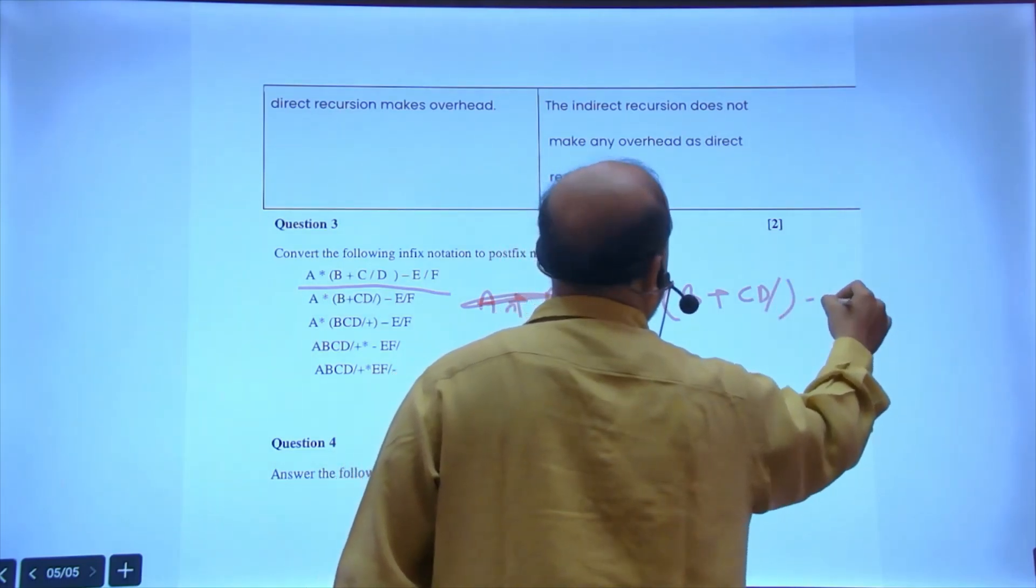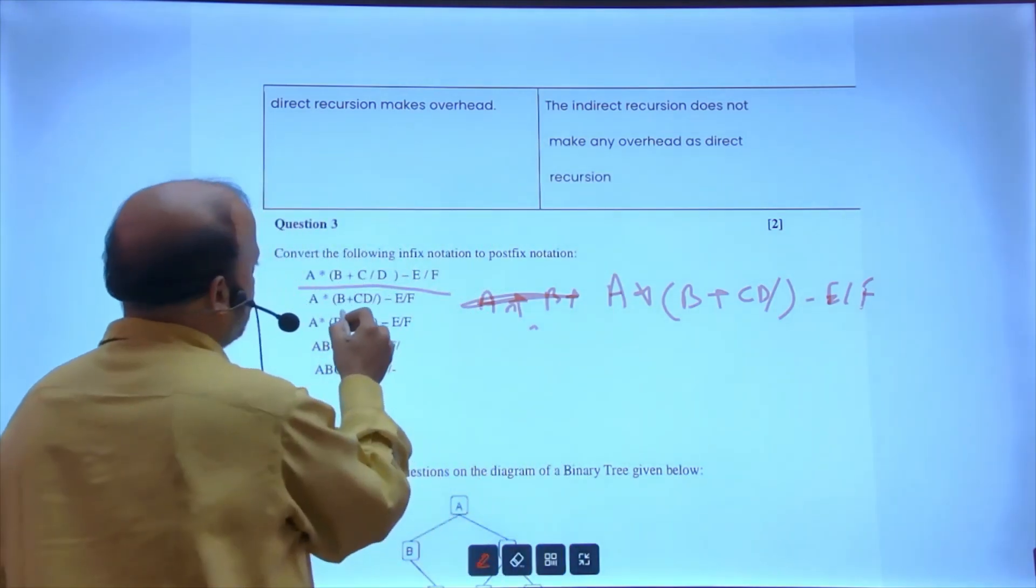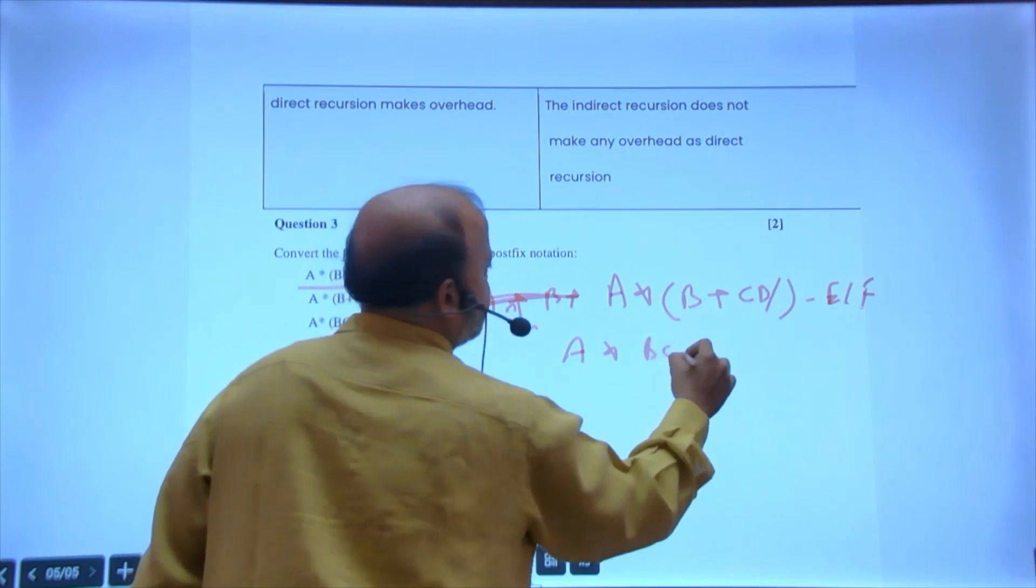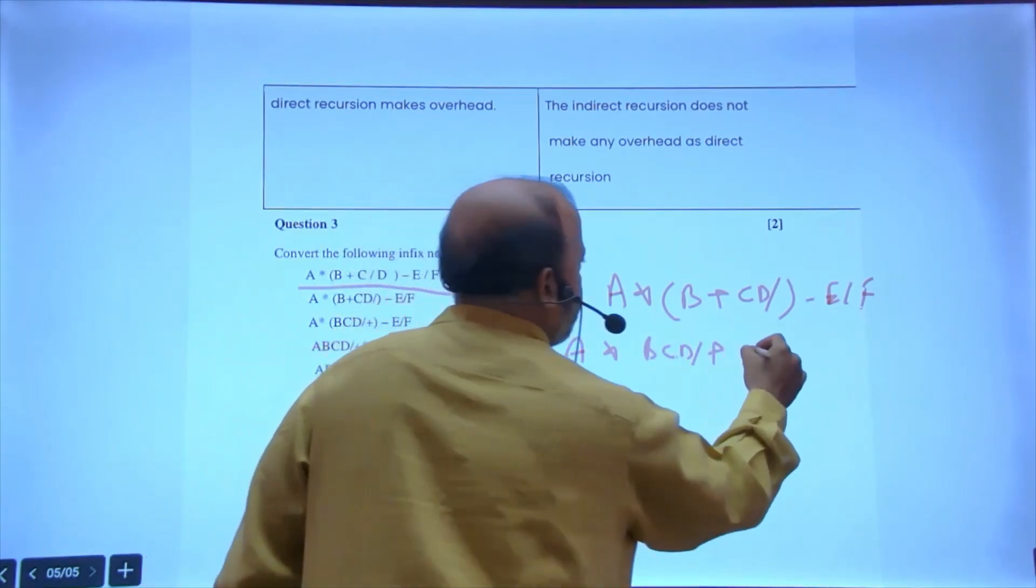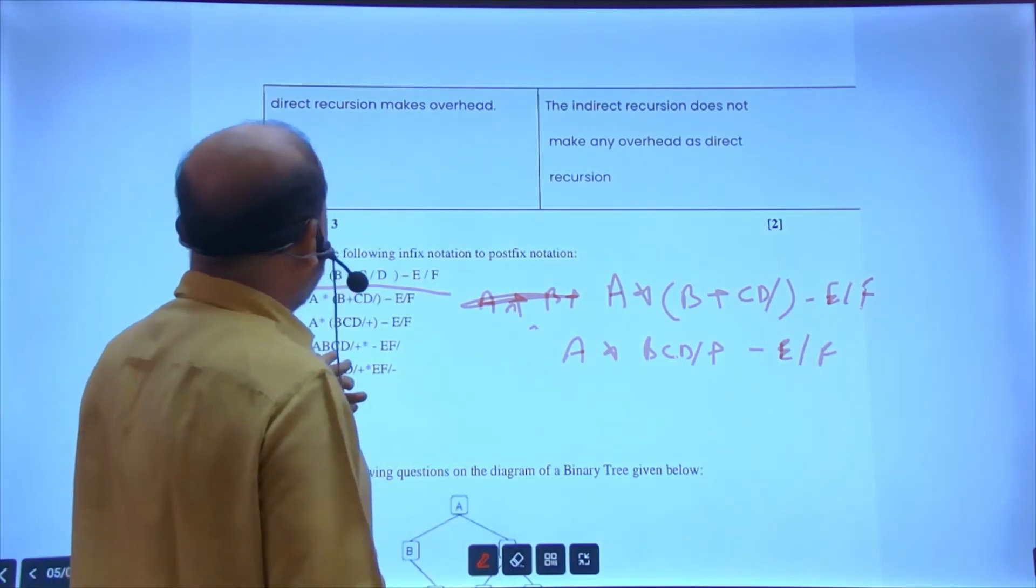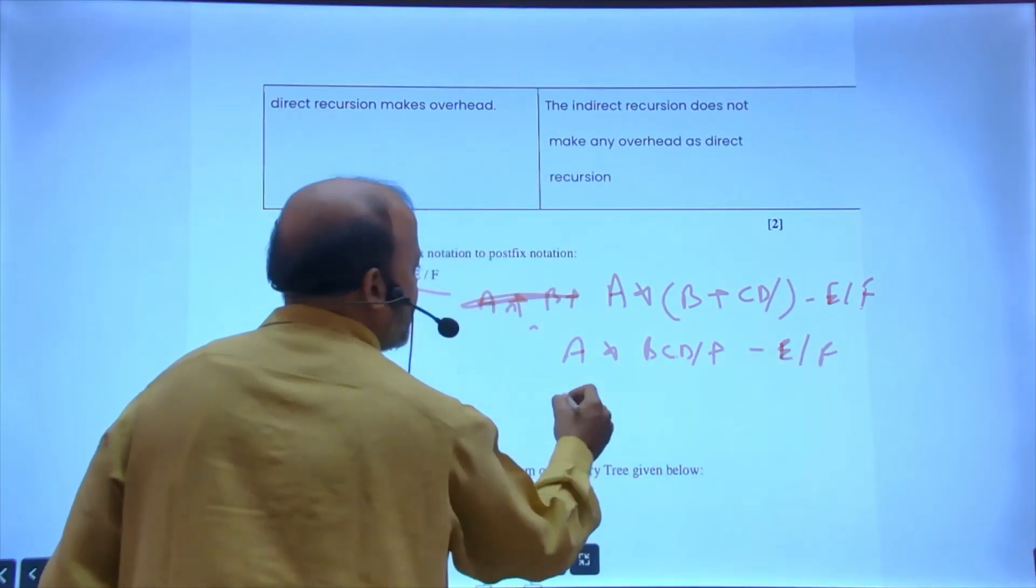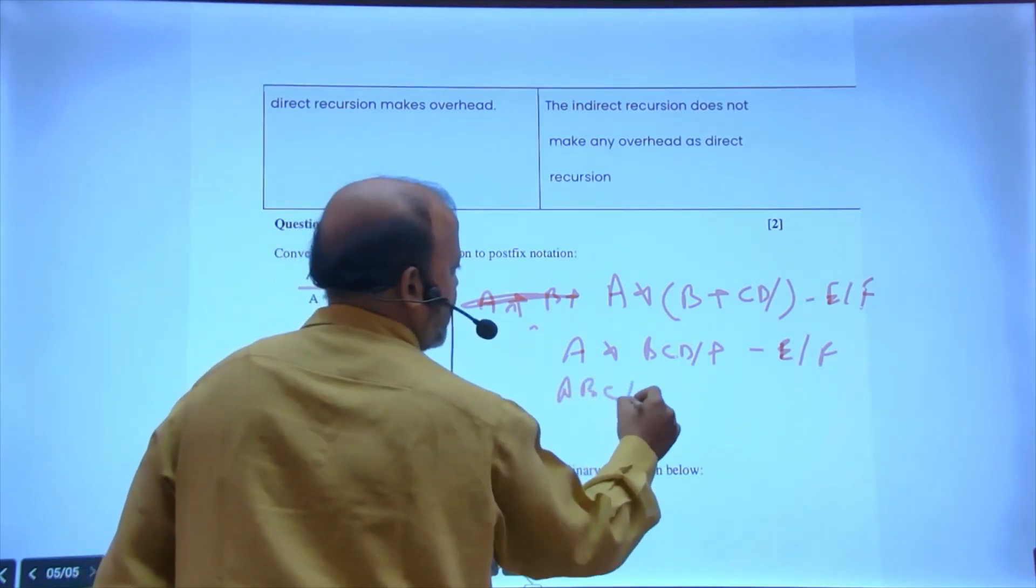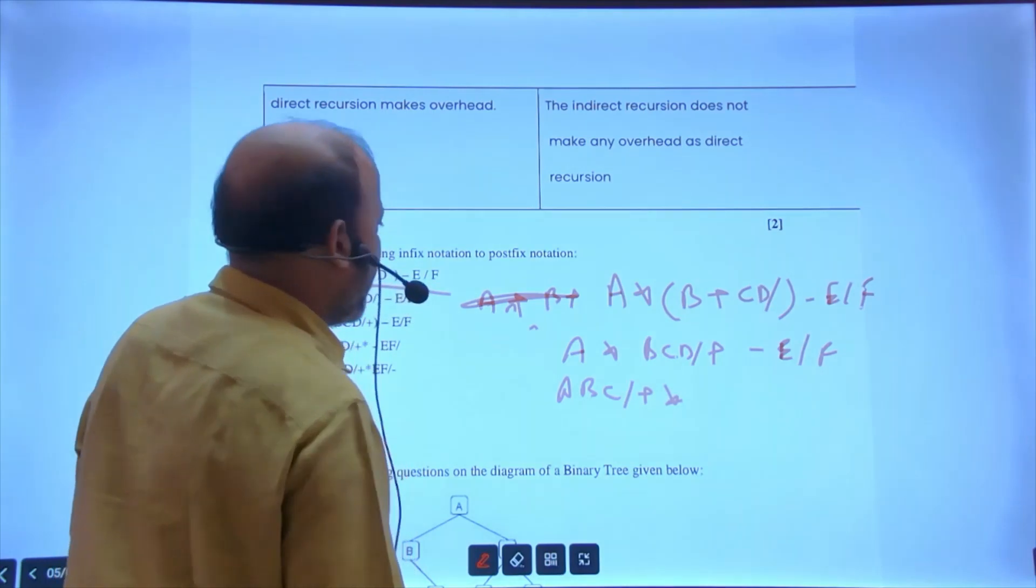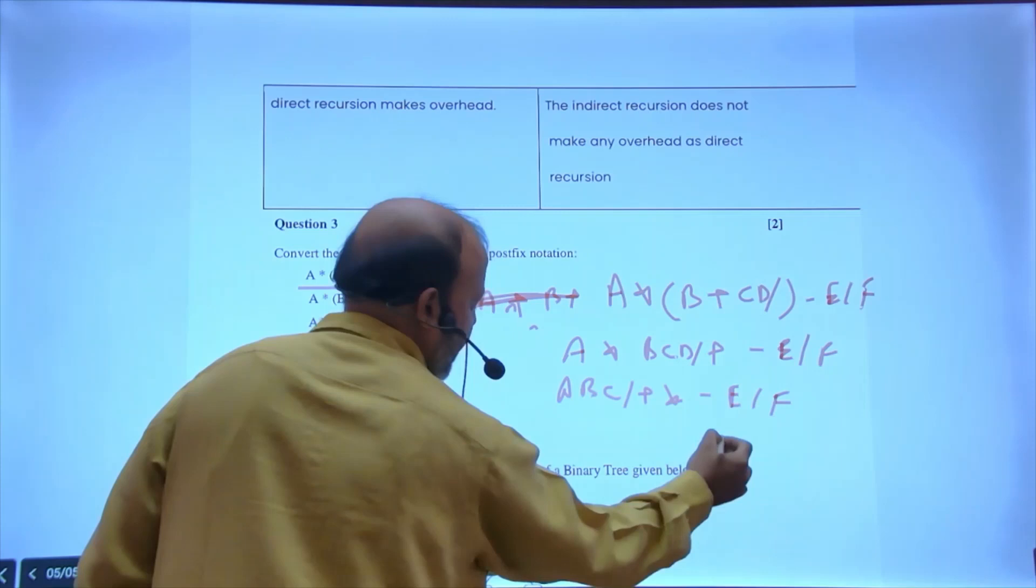a into b plus, this cd will become cd slash minus e slash f. Let us first do the bracket because in the bracket, a remains same, b cd slash plus minus e slash f.